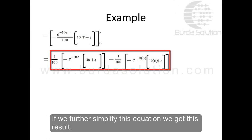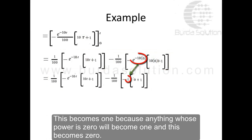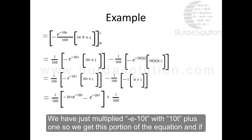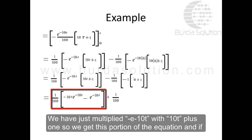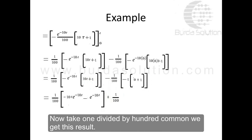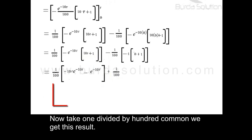Simplifying further: e^0 becomes 1 since anything raised to the power 0 is 1, and the other term becomes 0. Multiplying −e^(−10t) with (10t + 1) gives us that portion of the equation. Simplifying the remaining portion gives 1/100, and taking 1/100 as common factor, we get the final result of this integral.